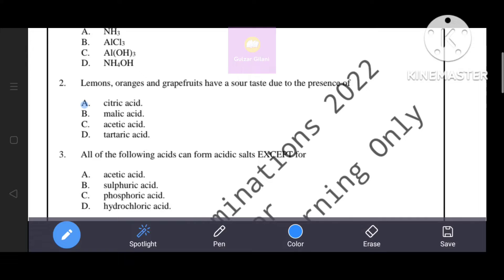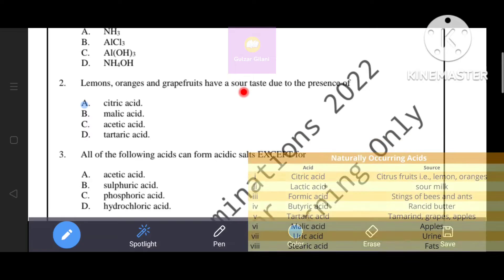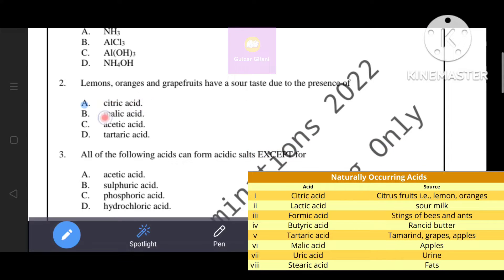Next question. Lemons, oranges and grapefruits have a sour taste due to the presence of... Given options: citric acid, malic acid, acetic acid, tartaric acid. The correct answer is option A, citric acid. Lemons, oranges and grapefruits have a sour taste due to the presence of citric acid.